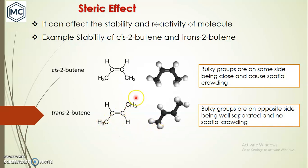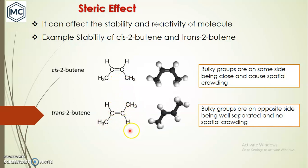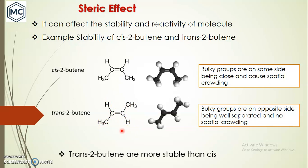In cis-2-butene the groups are well separated in trans, but in cis they are close together, causing strain and high energy. There is no strain in trans-2-butene, and it has lower energy. So which is the most stable one? Of course, trans-2-butene is more stable than cis. We can explain the stability of a molecule based on steric effect like this.